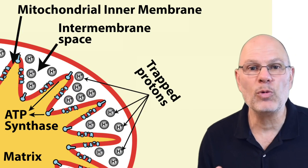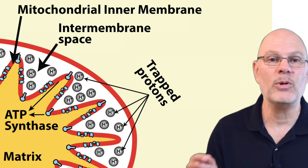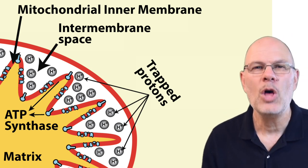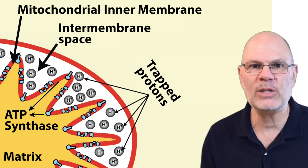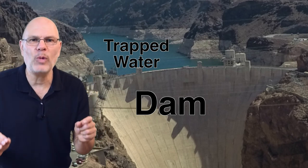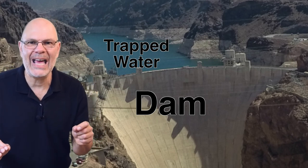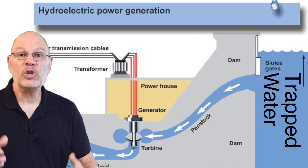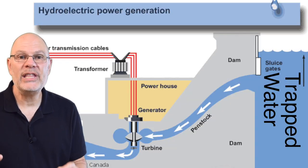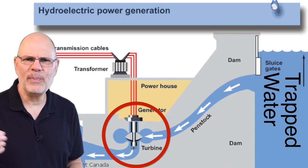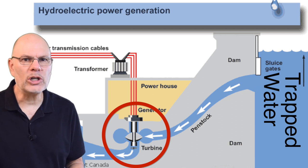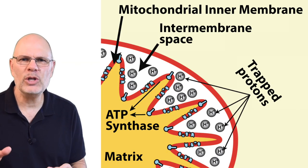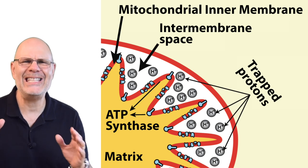Protons can't get through the phospholipid bilayers of either the inner or outer mitochondrial membrane. The protons packed into that space are like the water trapped behind a dam — they're a form of potential energy. Engineers build dams and then use turbines to convert the potential energy of the trapped water into electricity. Mitochondria do something that's analogous, but on a nanoscale.